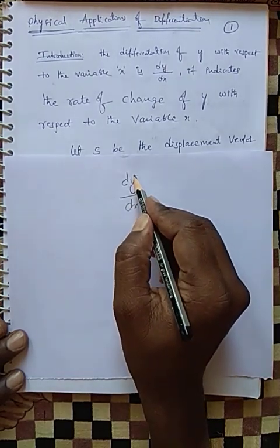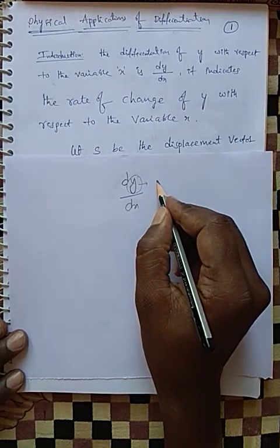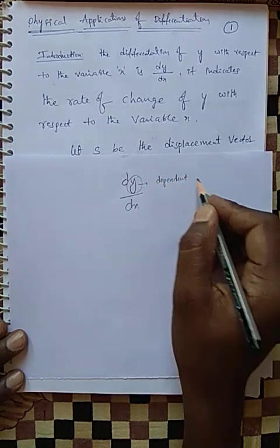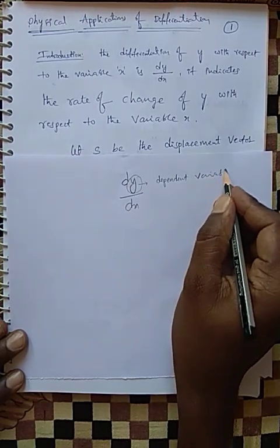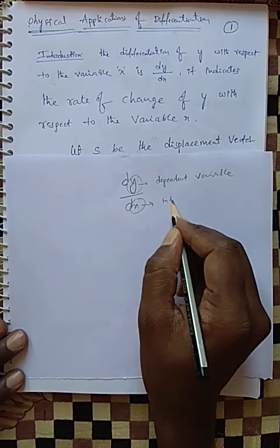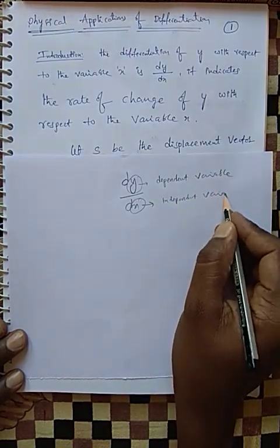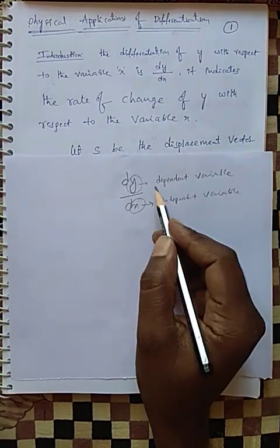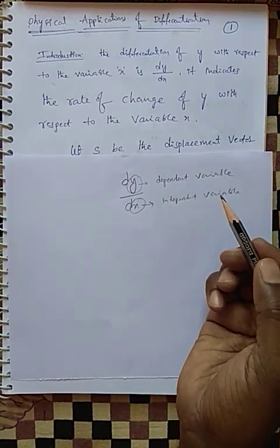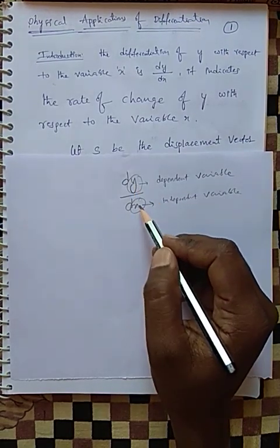Here the numerator variable y is called the dependent variable, and the denominator variable x is called the independent variable. Why do we call y the dependent variable and x the independent variable?